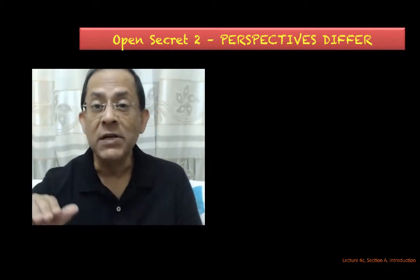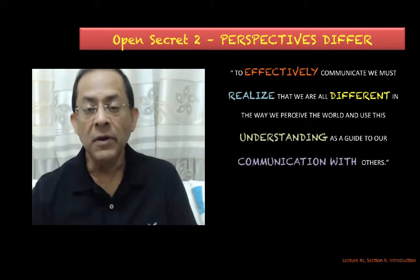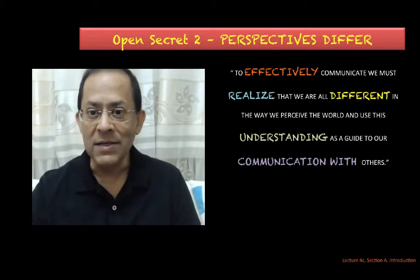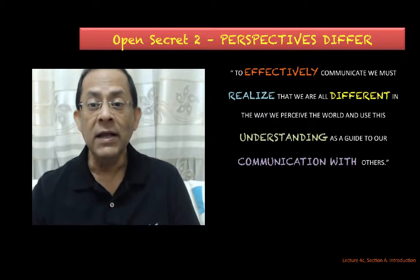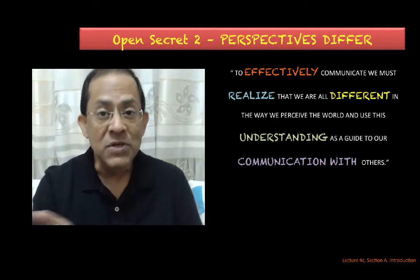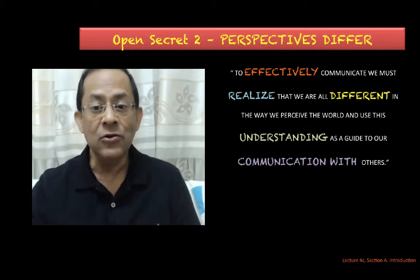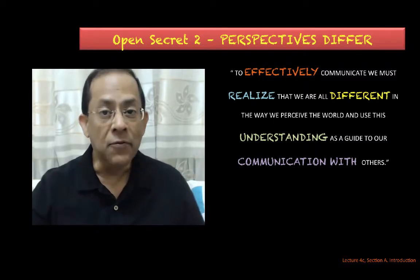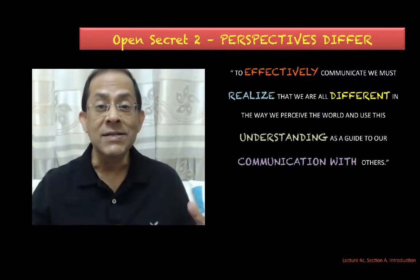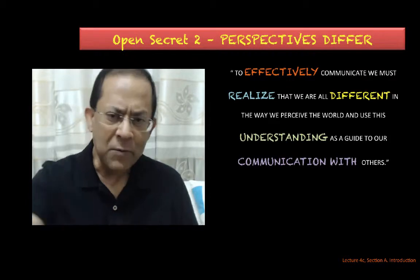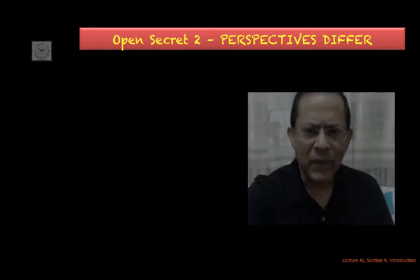I've named the second open secret 'Perspectives Differ.' To effectively communicate, we must realize that we are all different in the way we perceive the world, and use this understanding as a guide to our communication with others. In short: people perceive things differently, and you need to understand other people's perception to communicate with them more effectively. Let me explain this with an example.